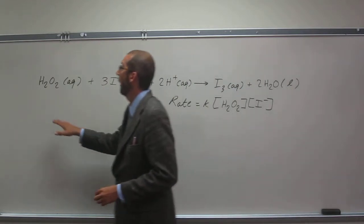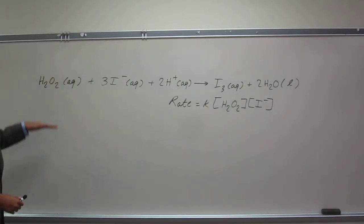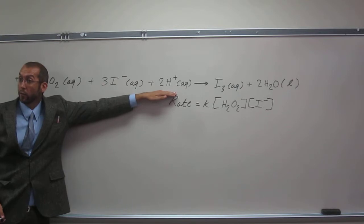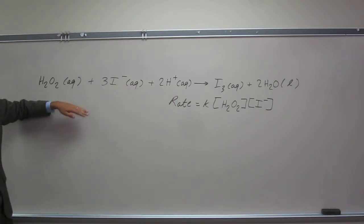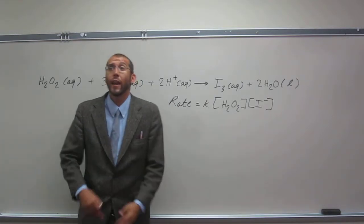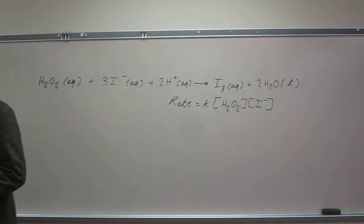So notice in this one, how many reactants do we have? How many different types of reactants? One, two, three, right? So there's three different types of reactants here. How many are shown in the rate law? Just two. So that should prove to you already that the coefficient has nothing to do with what the rate law has to do with.